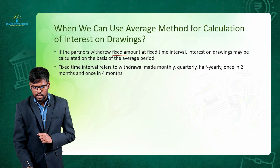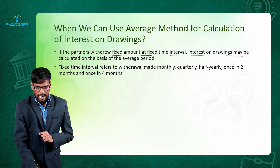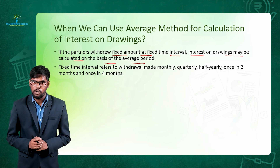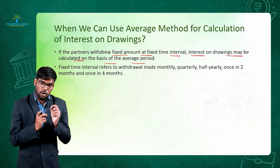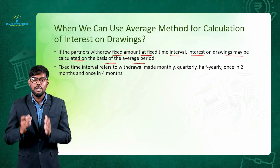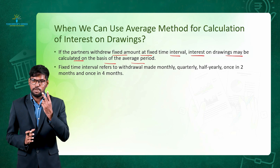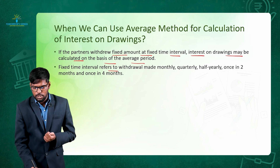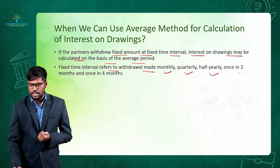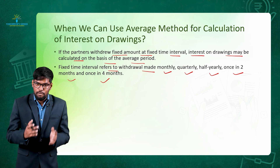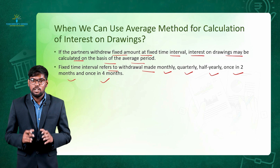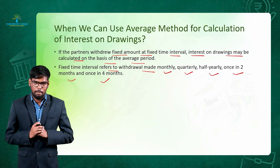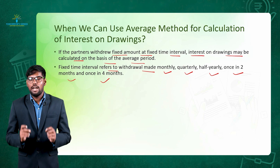If a partner withdraws a fixed amount at a fixed time interval, interest on drawings may be calculated on the basis of the average period. To use the average method, two things are important: the partner should withdraw a fixed amount of money, and should withdraw at fixed intervals. The fixed time interval refers to withdrawals made monthly, quarterly, half-yearly, once in two months, or once in four months — the sequence should be regular and the amount must be fixed.